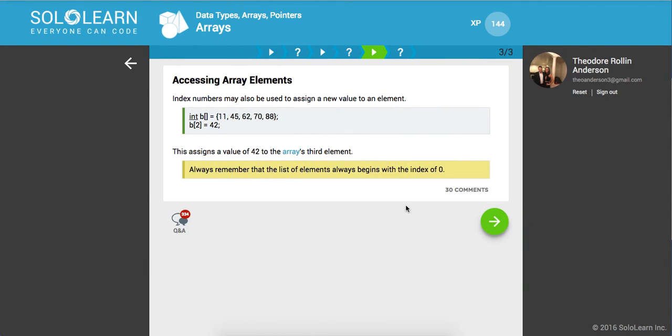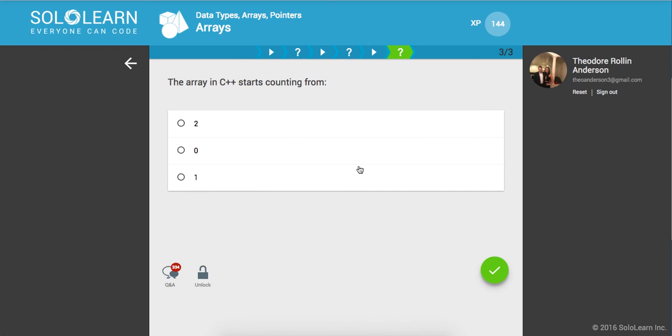Index numbers may also be used to assign a new value to an element. Here we've initialized our array. Currently at position two, zero one two, we have 62. But now we say okay compiler, we want to grab this array of B and update position two to now store the integer of 42. This assigns a value of 42 to the array's third element or index two. Always remember that the list of elements always begins with the index of zero. The array in C++ starts counting from zero.